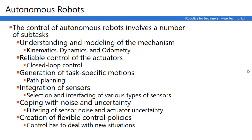Another sub-task involves generation of task-specific motions, such as path planning, and integration and interfacing of different types of sensors so the robot can understand and interact with its environment. This includes distance measurement sensors, obstacle detection sensors, and location-specific sensors like GPS. Additional sub-tasks include coping with noise and uncertainty through sensor noise filtering, creation of flexible control policies, and dealing with new or unexpected situations.